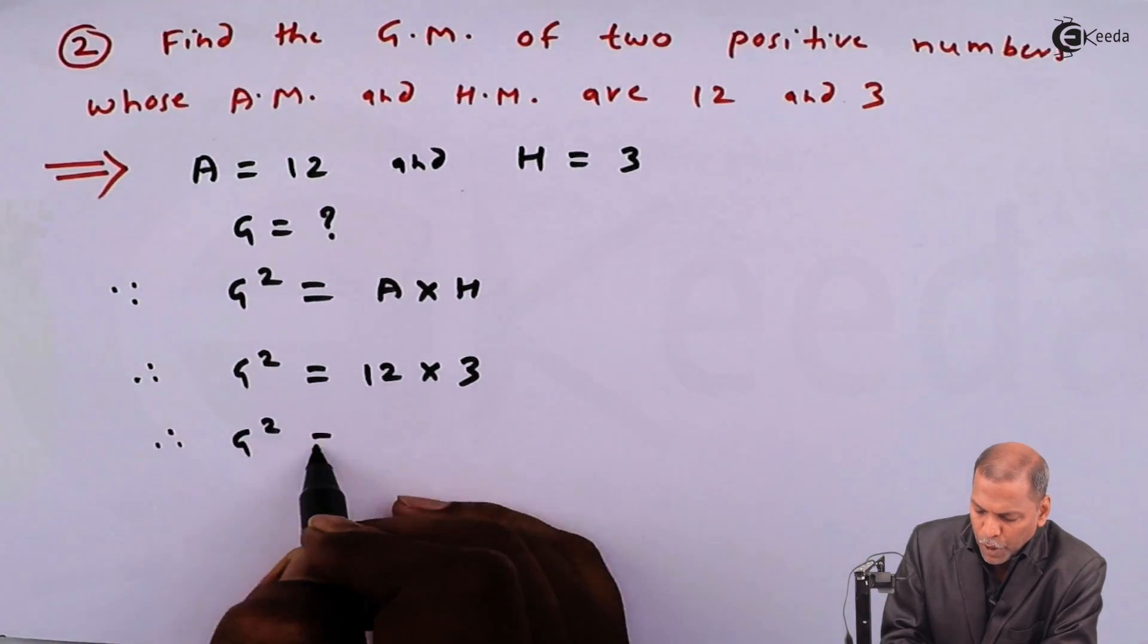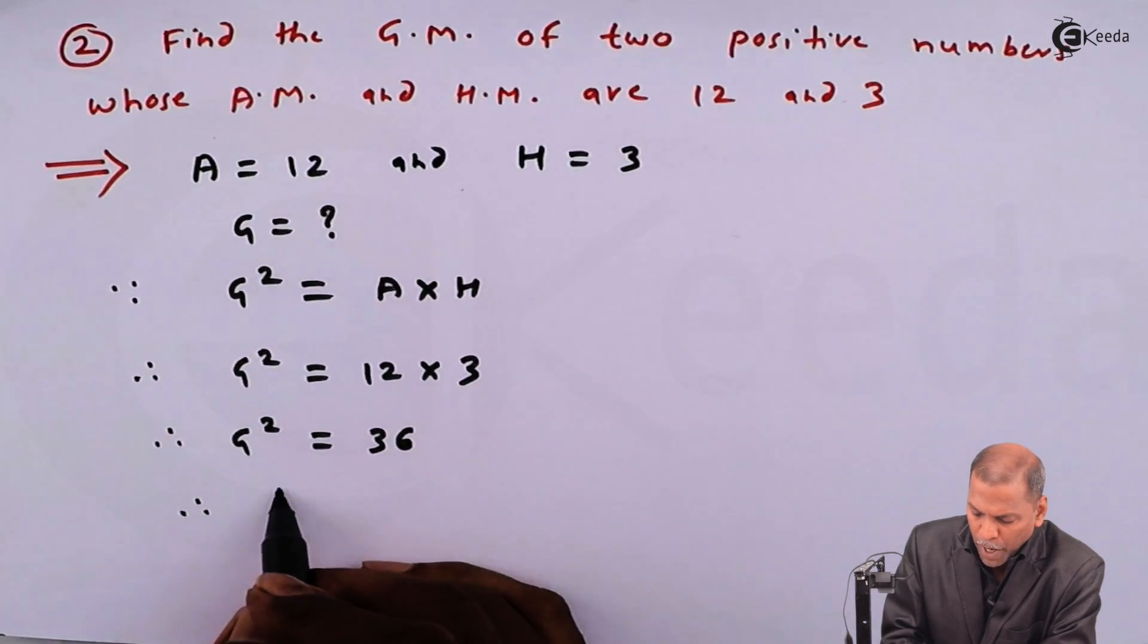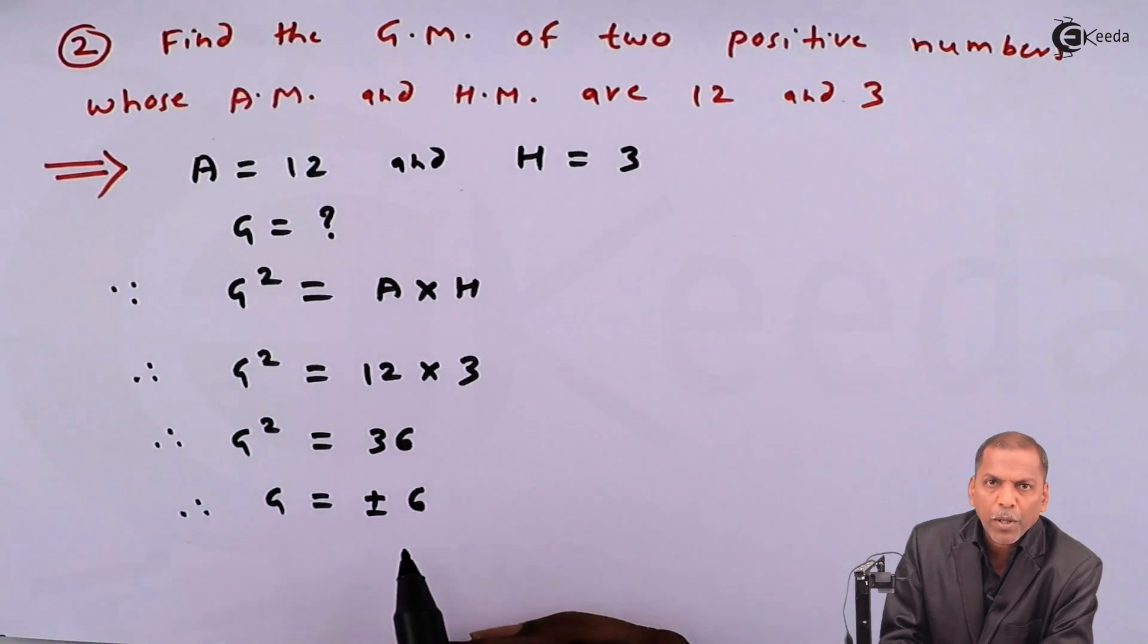Therefore, G squared is equal to 36. Taking square root, so we have G is equal to plus minus 6.